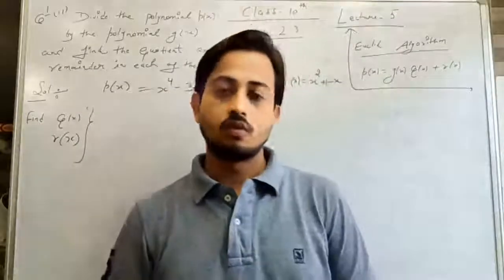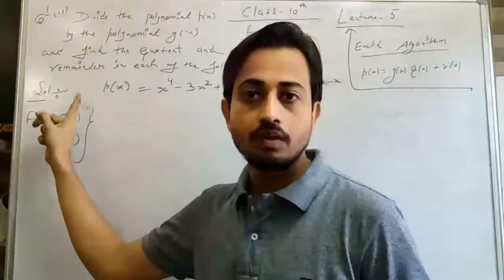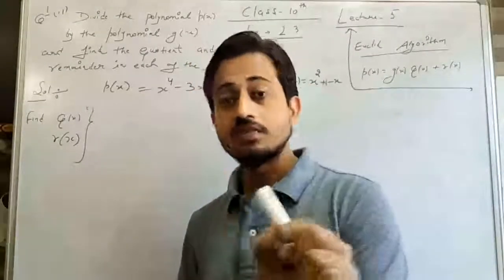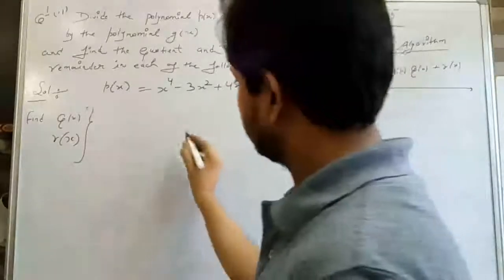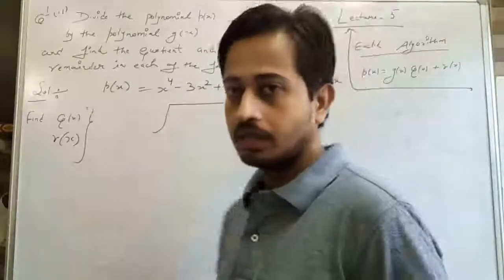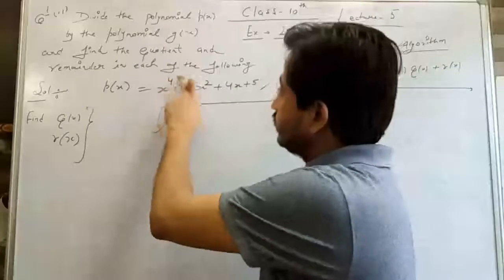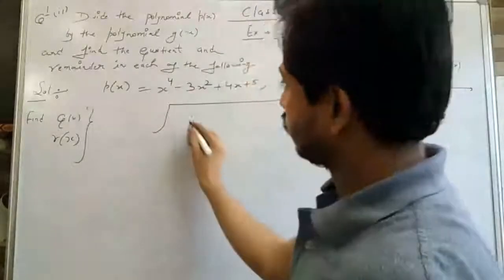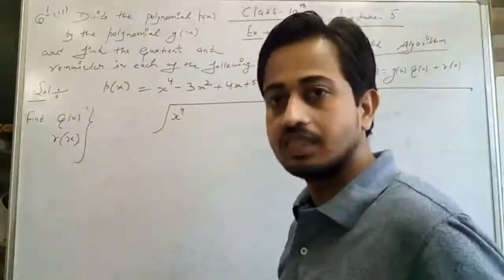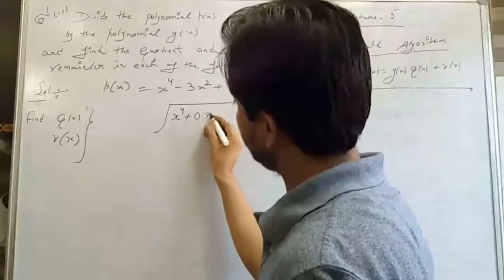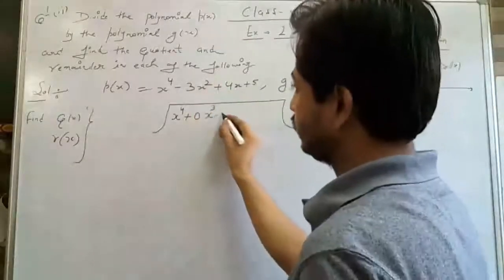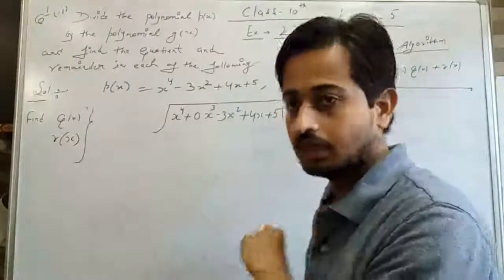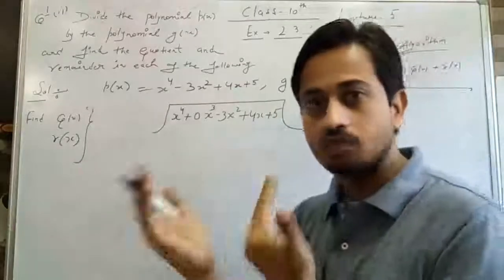Let's look at the second part of the question. Here P(x) = X⁴ − 3X² + 2X + 5 and G(x) = X² − X + 1. Note that the highest power is 4, then the X³ term is missing, so we write it with coefficient 0. The G(x) has terms X², −X, +1, written in decreasing order. Our first term is X⁴ divided by X² giving X². We multiply X² by the divisor: X² · X² = X⁴, X² · (−X) = −X³, X² · 1 = X².